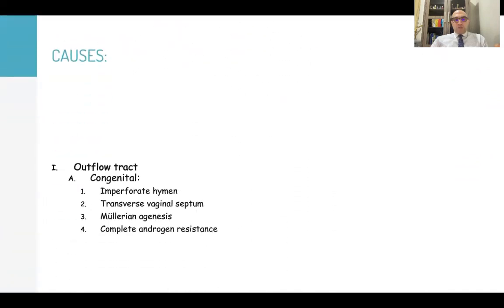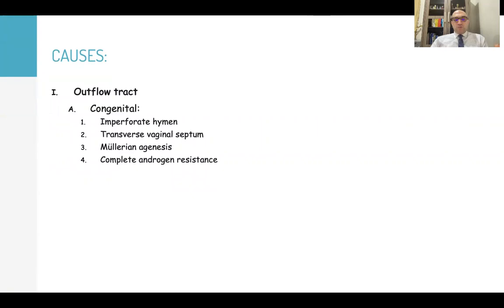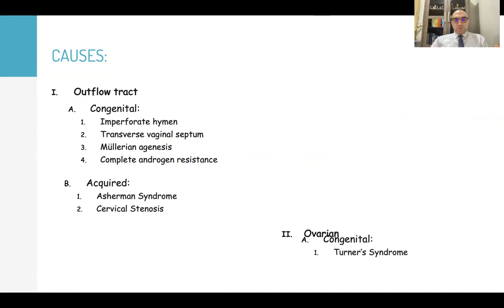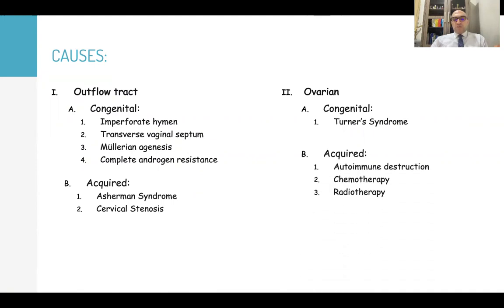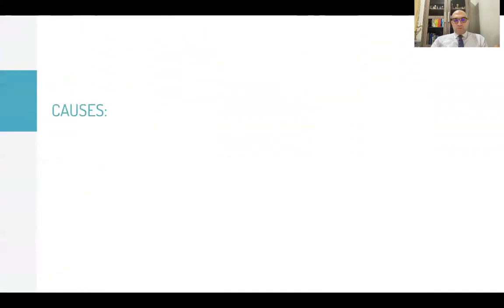For outflow tract causes, congenital causes include imperforate hymen, transverse vaginal septum, Mullerian agenesis, and complete androgen resistance. Acquired causes include Asherman's syndrome and cervical stenosis. For ovarian causes, congenital causes include Turner's syndrome, and acquired causes include autoimmune destruction or damage due to chemotherapy or radiotherapy.